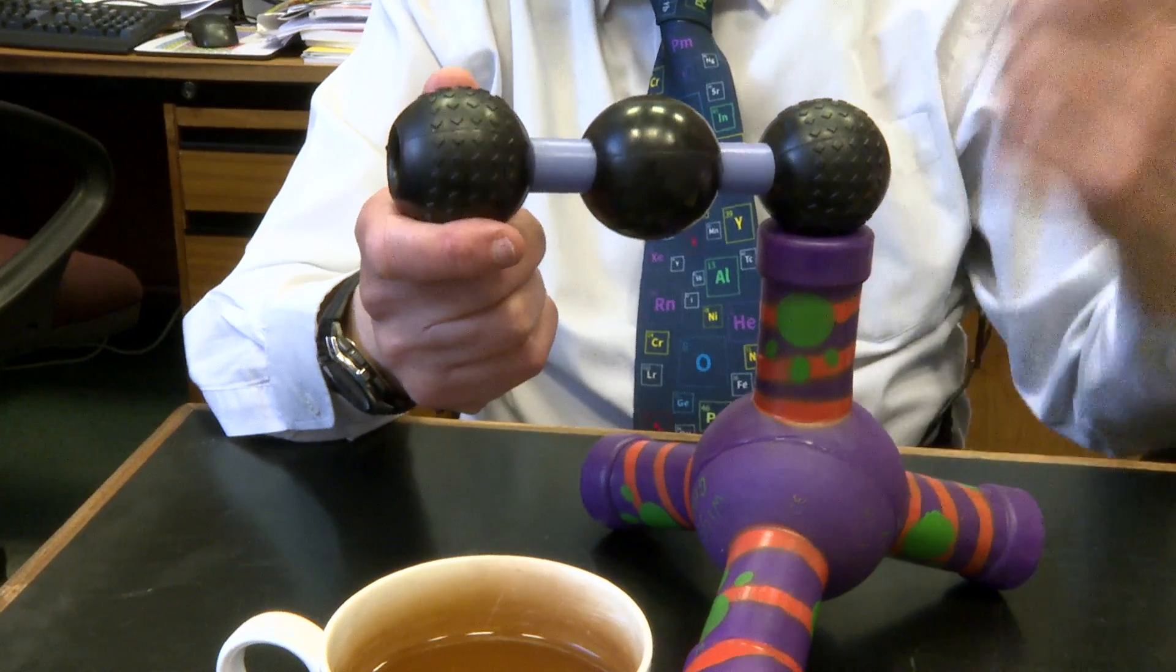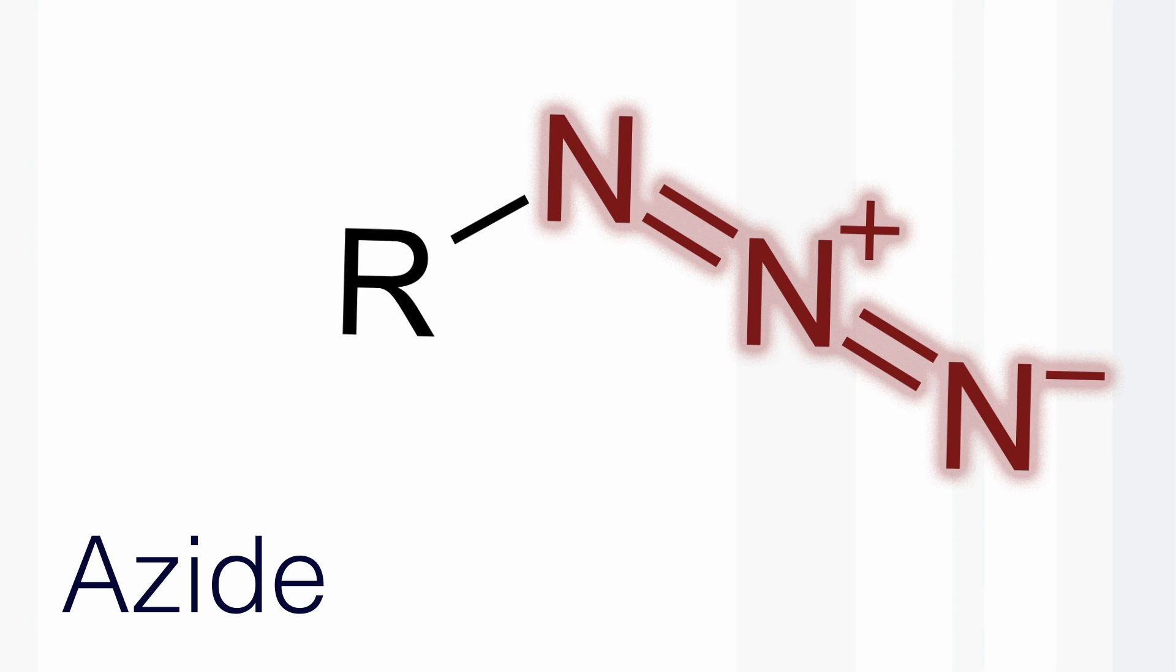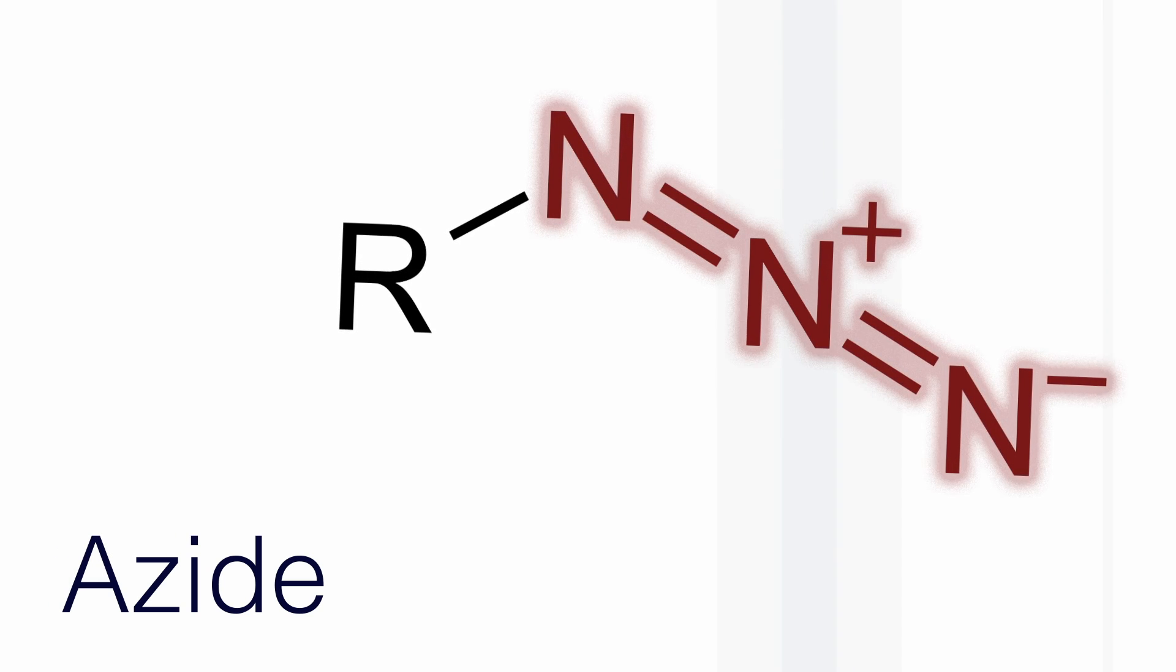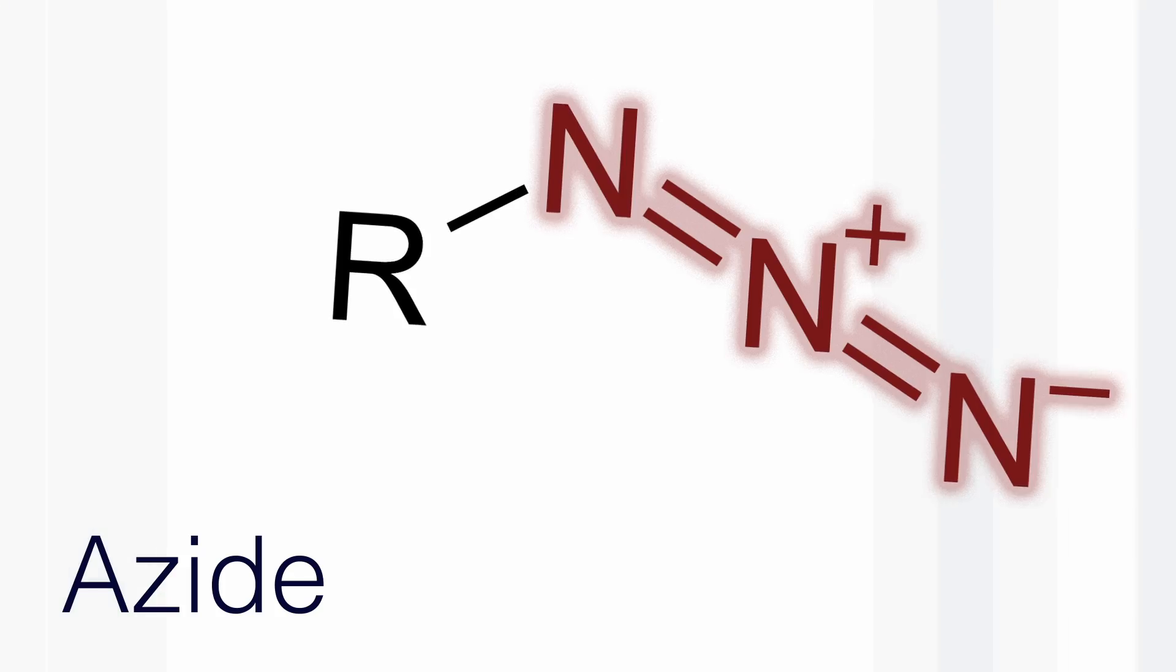Azides are used in detonators for explosives, things like that. They discovered that if you used a copper catalyst, you could get reactions to go very well. It is not the usual copper 2+, like copper sulfate, but it is copper 1, which is not very soluble in water. But these reactions go very well in water and there's a whole range of them.